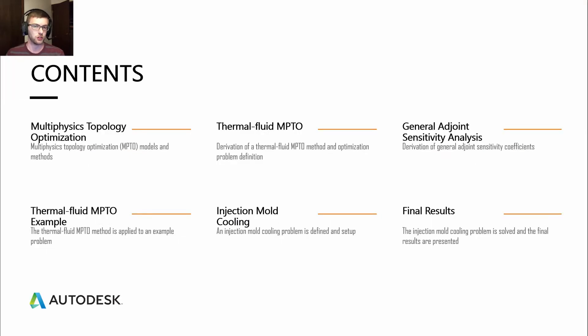Let's get started on the presentation. We're going to look at the contents first. First we're just going to look at some of the models and methods that go with multi-physics topology optimization specifically for heat exchanger design. We'll look at thermal fluid, the general adjoint sensitivity analysis, and then look at how we can apply a thermal fluid multi-physics topology optimization method to an example and also look at how that can be used for injection mold cooling and the final results.